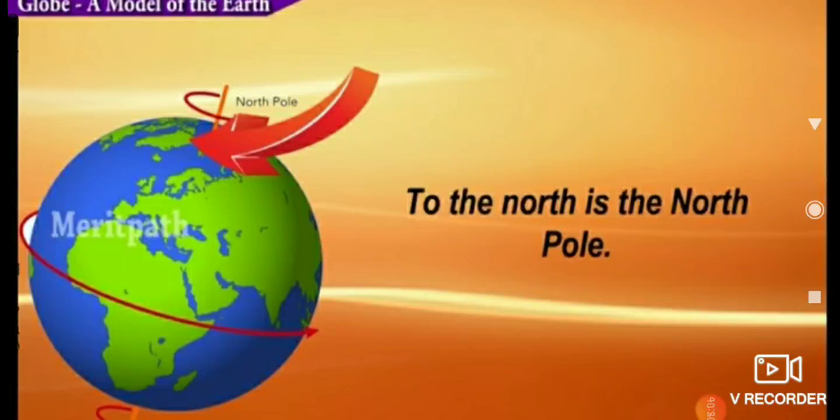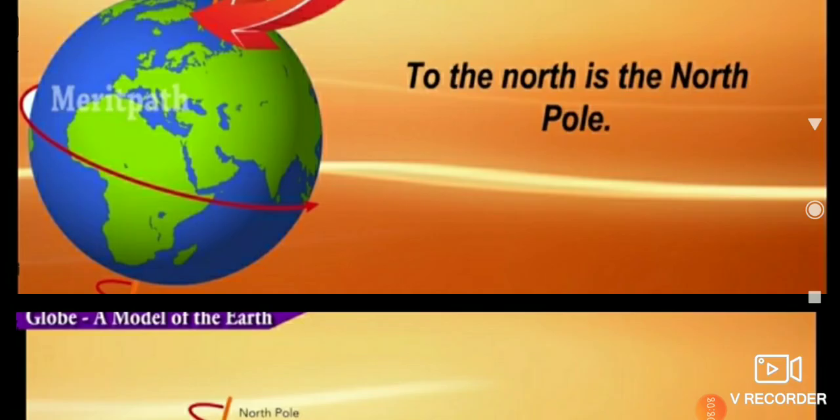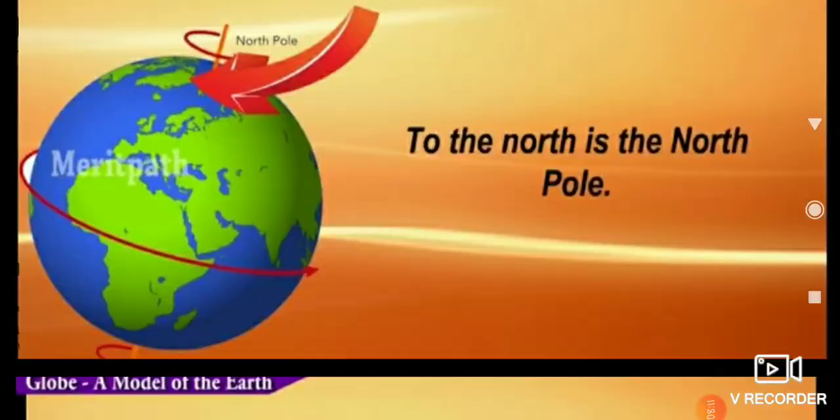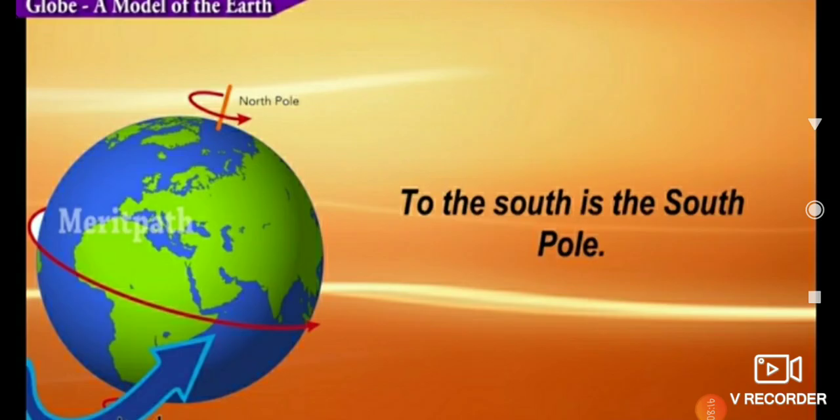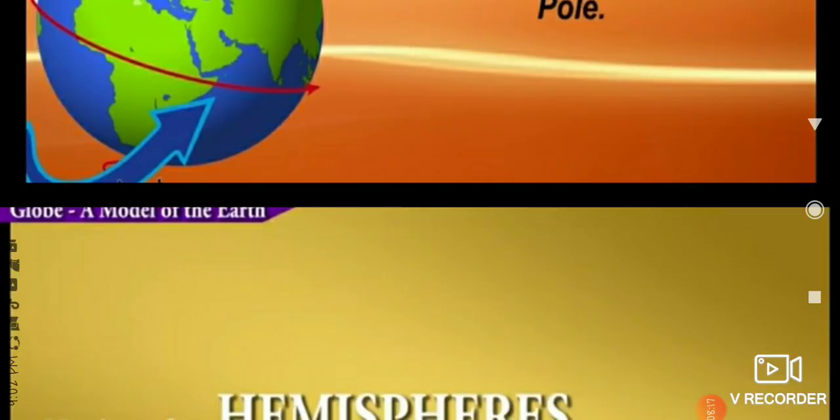There are two types of poles. First one is the North Pole, second one is the South Pole. To the north is the North Pole; to the south is the South Pole.